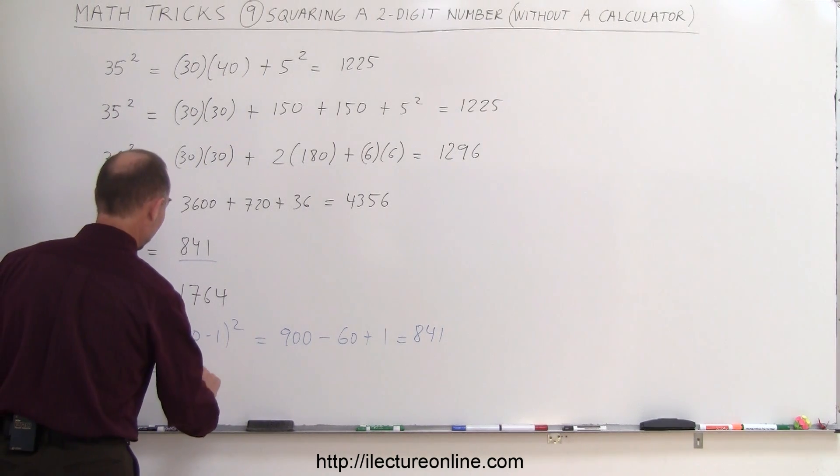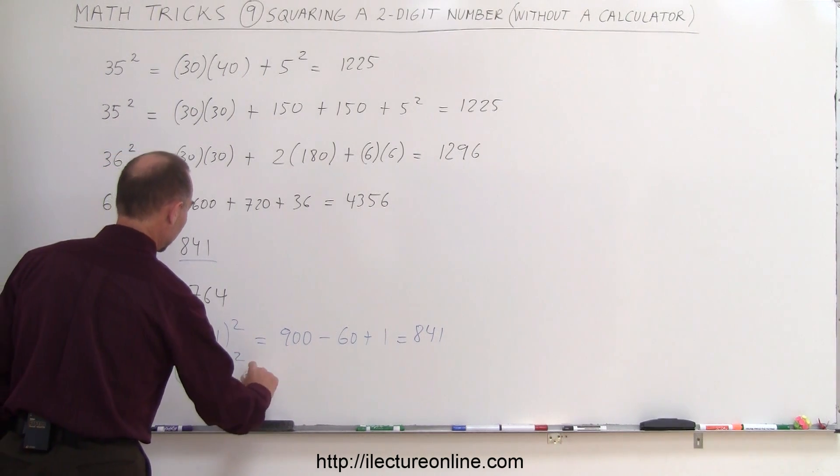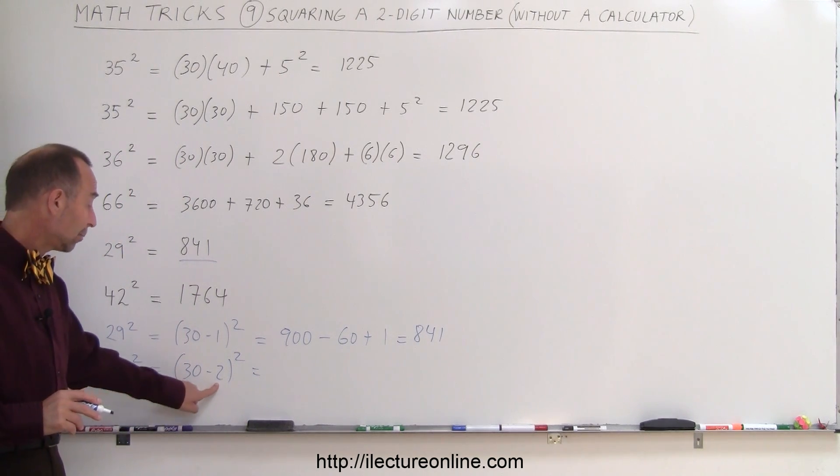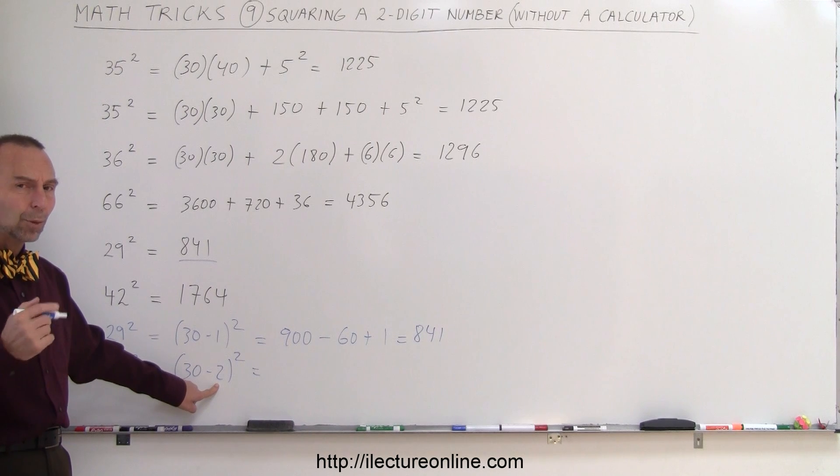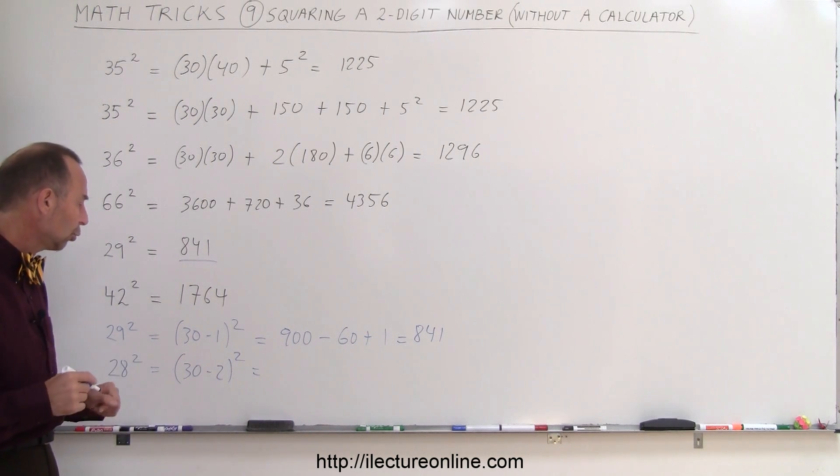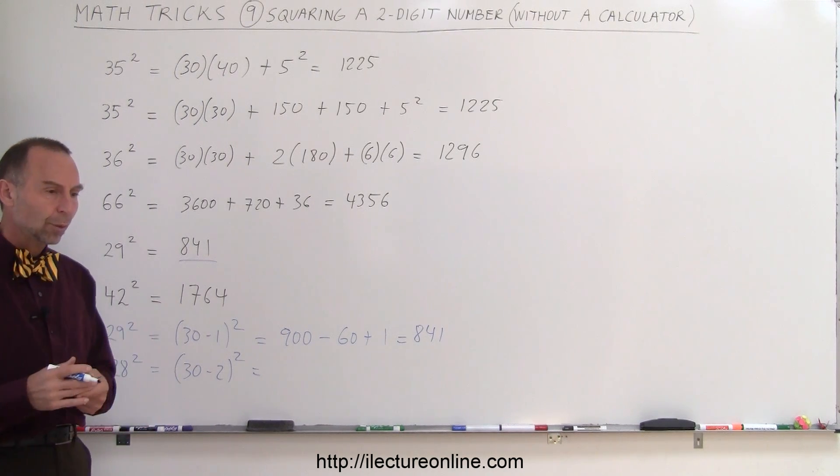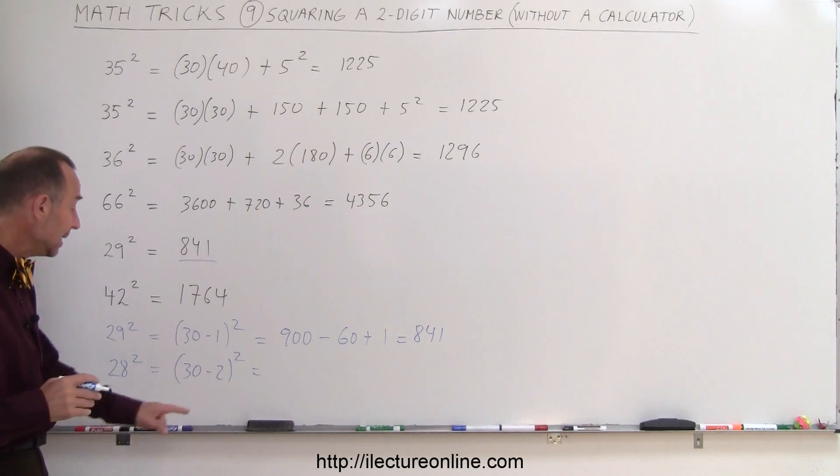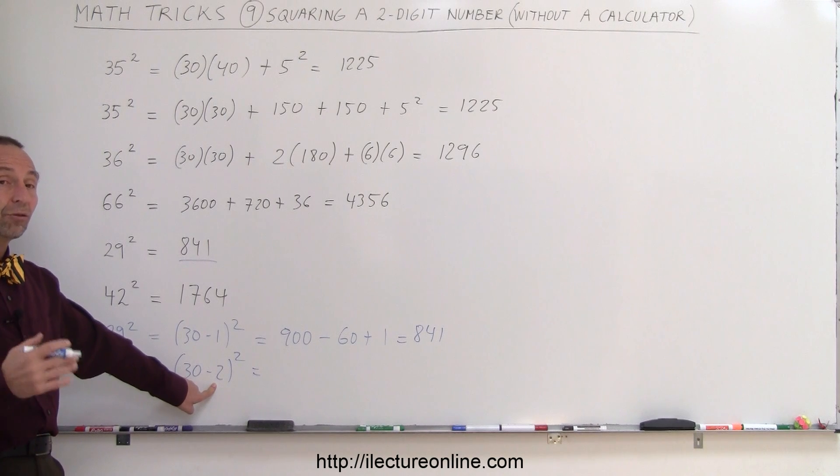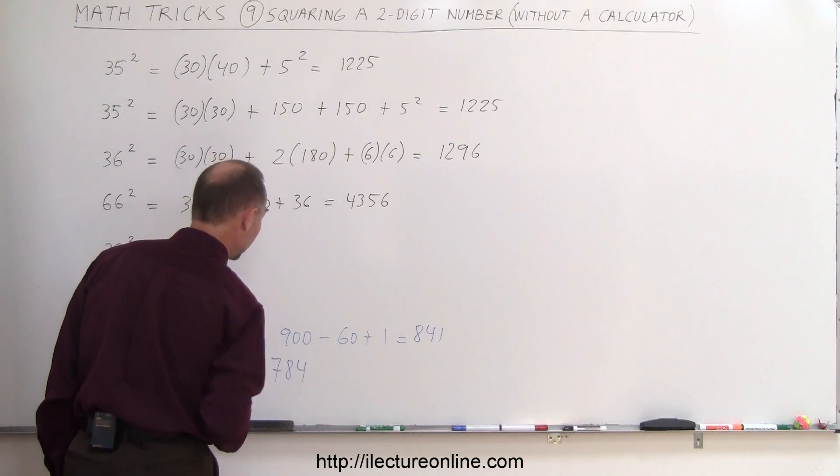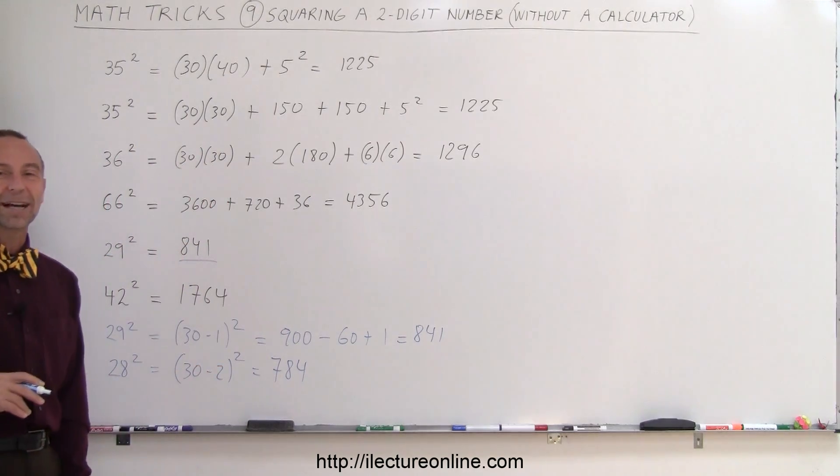So 28 squared, you can think of 30 minus 2 squared, again, 30 squared, that's 900, 30 times 2 is 60, we subtract that, but we have to do it twice, so it's minus 120, because 30 times 2 is 60, times 2 is 120, so 900 minus 120 is 780, plus 2 squared, that's 4, so 784, and that's how we square a two-digit number without a calculator.